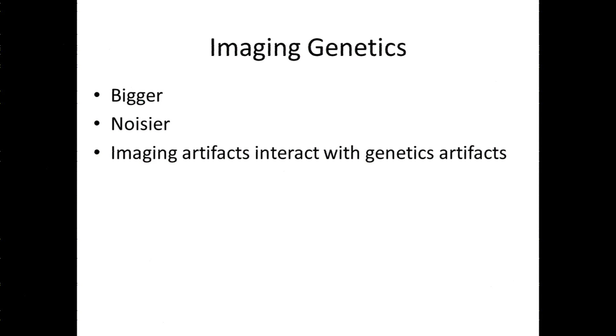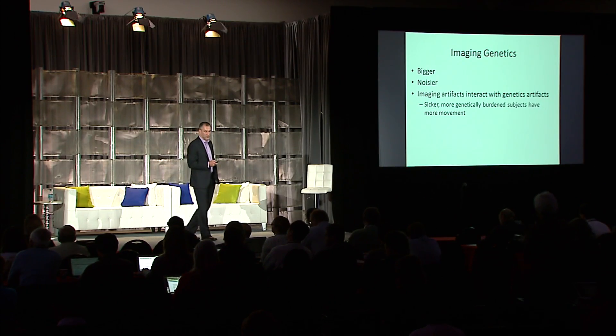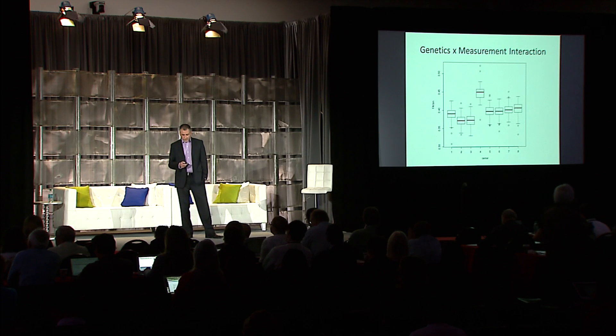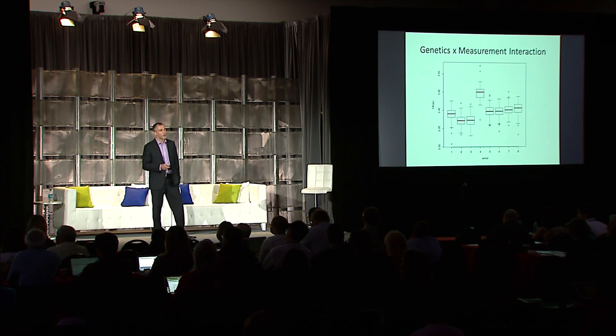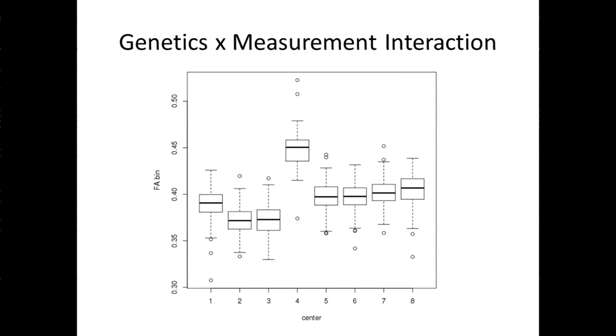One example: there are a lot of big imaging genetic studies of autism. But this becomes problematic because the kids that are sicker and probably bearing a bigger genetic burden are also the kids that are likely to move more in the scanner, so they'll have more movement-related imaging artifacts. Back to the Imagen database — I mentioned Site 4 as a statistical outlier in imaging. Each of these eight sites is sampled from different regions in Europe, so each has a different genetic background, and how controlling for population structure interacts with the site-specific imaging confound is complicated.